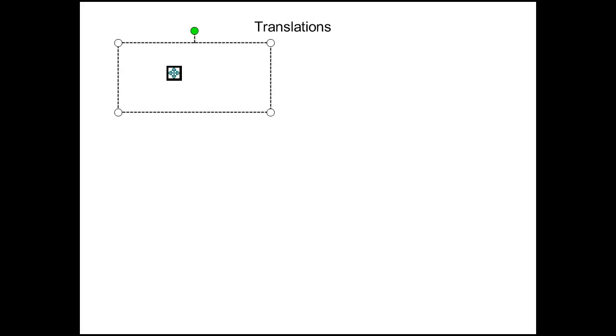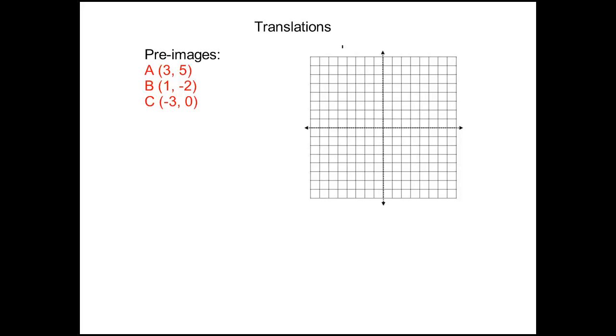You're still going to have pre-image points. You're still going to call them A or B or C, Q, whatever. We're still going to want to plot those on a coordinate plane.